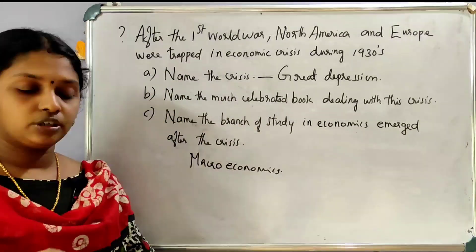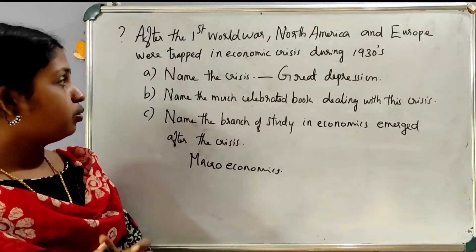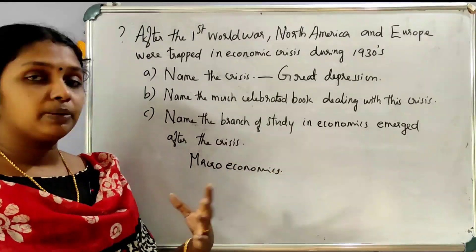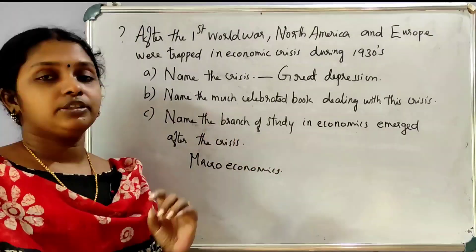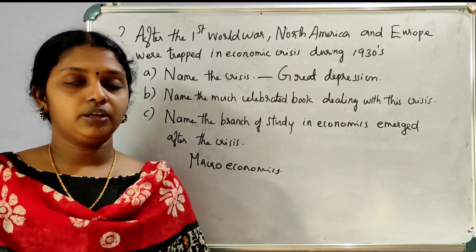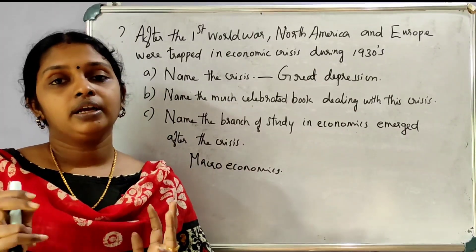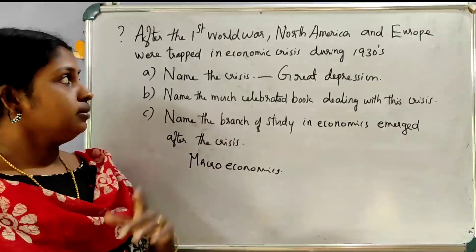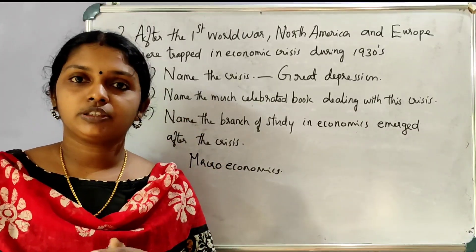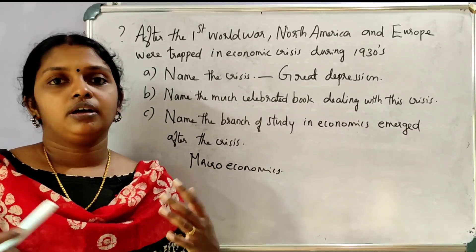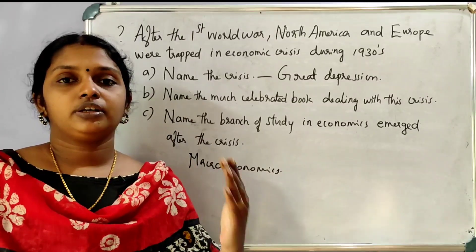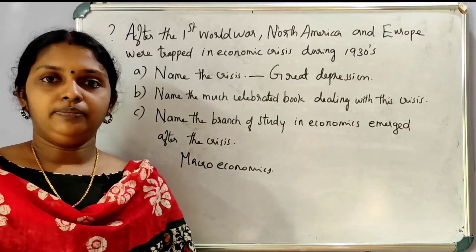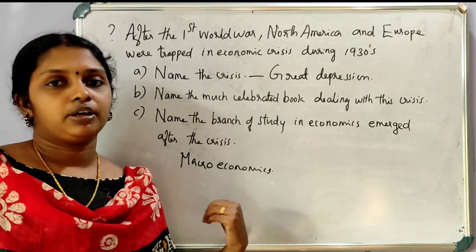The Great Depression led to MacroEconomics as a different branch. The differences between MicroEconomics and MacroEconomics, the book published in 1936, the Great Depression — these are all covered in the first chapter. The first chapter is very easy. We know about MacroEconomics and MicroEconomics and their differences and factors.